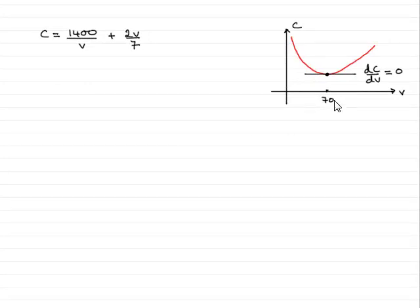And we know that that occurred when V was 70. So all we've got to do is just substitute V equals 70 into here.